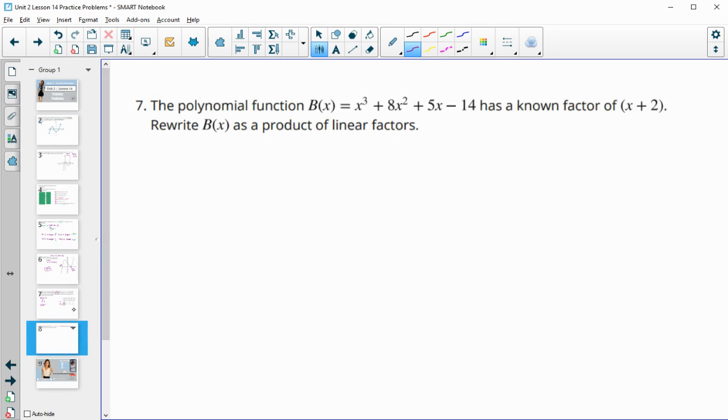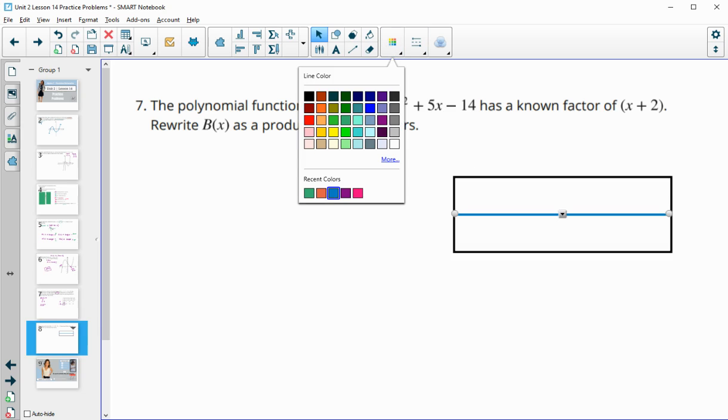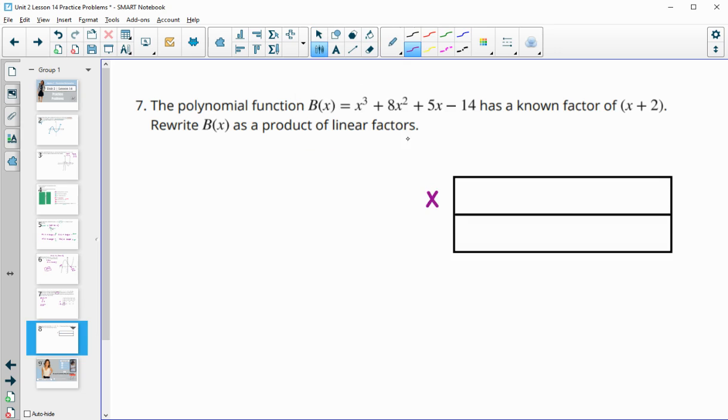Number seven: The polynomial function B(x) = x^3 + 8x^2 + 5x - 14 has a known factor of (x+2). Write B(x) as a product of linear factors. We're going to divide this factor in using the box or diagram method, then factor the quadratic. Let's divide in x plus 2. Put x plus 2 here, and start with the x cubed part of the polynomial. x times x squared gives us x cubed, and x squared times 2 is 2x squared.